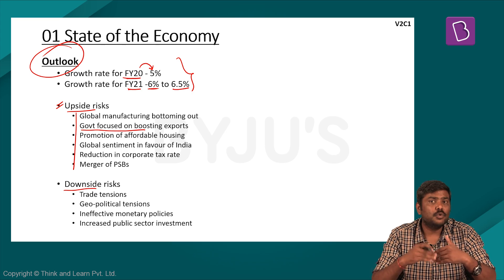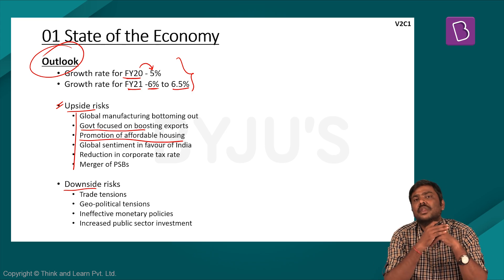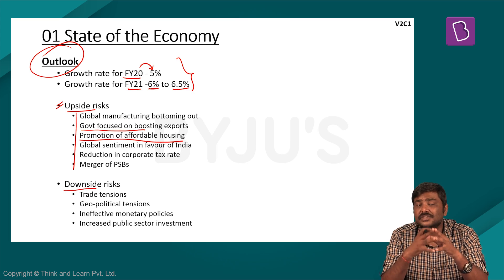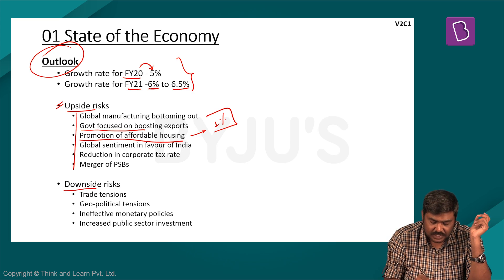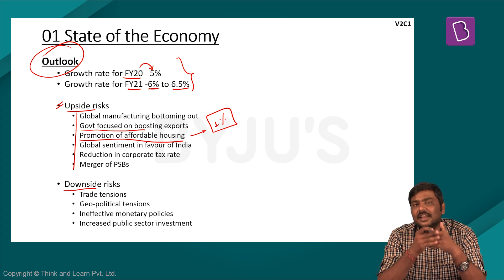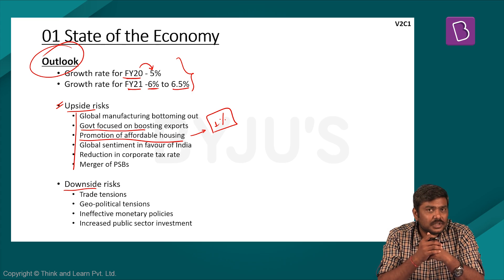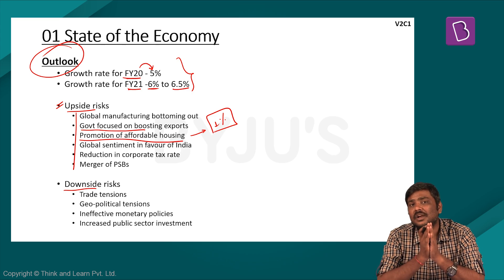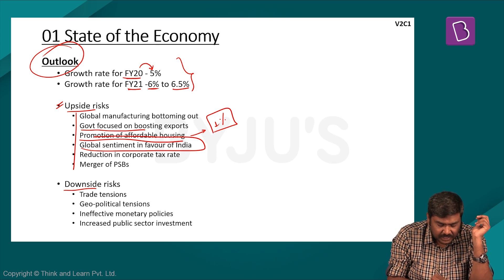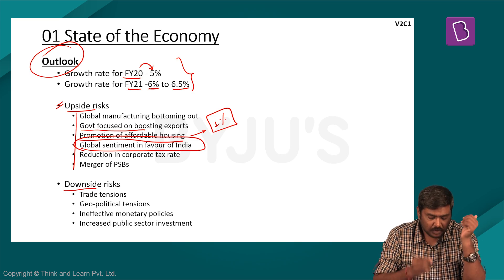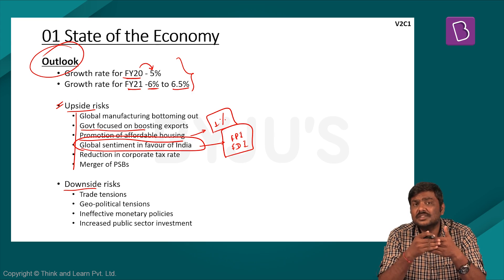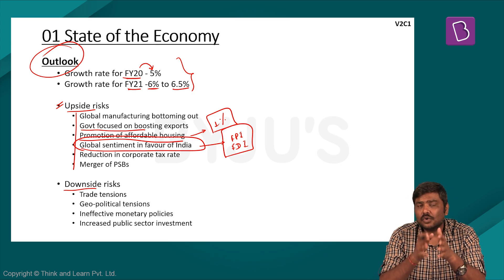Third, promotion of affordable housing: many initiatives have been taken to promote real estate consumption. One important initiative by the GST Council reduced the GST rate on the affordable housing segment to 1%, which is expected to increase consumption of real estate. The real estate sector is important because it contributes to GDP and generates large employment, and it has recently come under a lot of stress, which is one reason for the domestic slowdown. Fourth, global sentiment is in favour of India, as reflected by net inflows of both FPI and FDI, showing global investors are confident about Indian growth prospects.